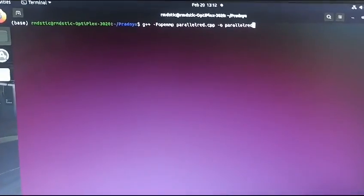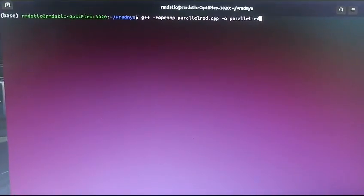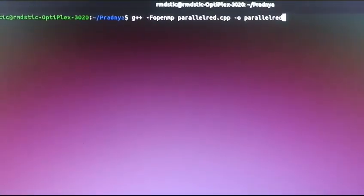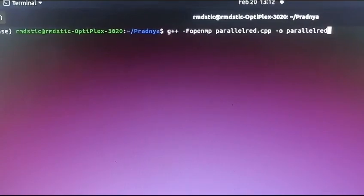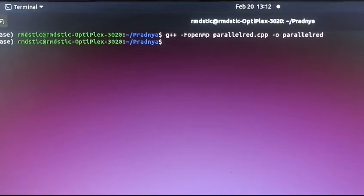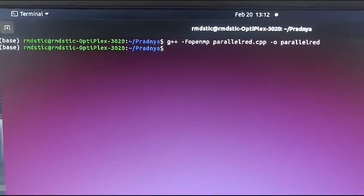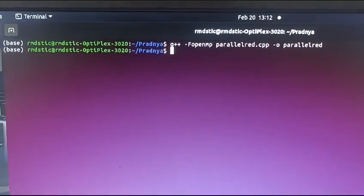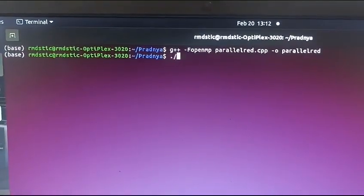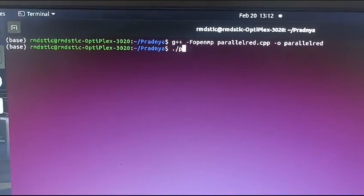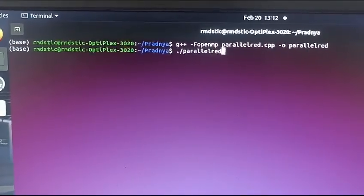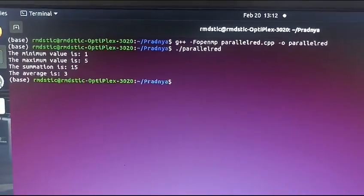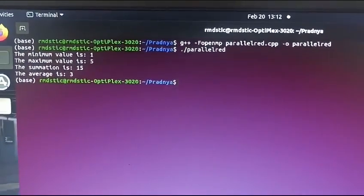In the terminal, write g++ -fopenmp parallelreduction.cpp -o parallelreduction. Next to run the program write ./parallelreduction. Now you will get the output as min value, max value, sum and average.